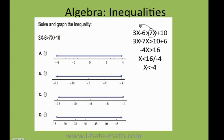So I have 3x minus 7x, that gives me negative 4x. I send this negative 6 to the other side. Remember, any time you move a term in an equation or inequality, the sign needs to change. So I have negative 4x greater than 16.